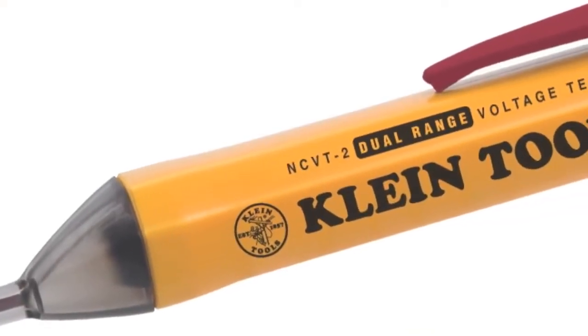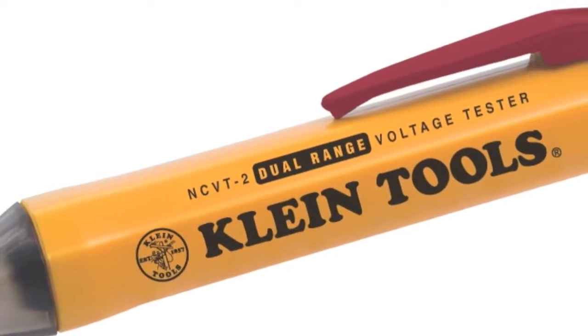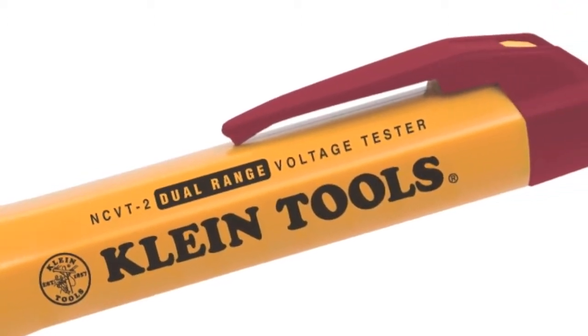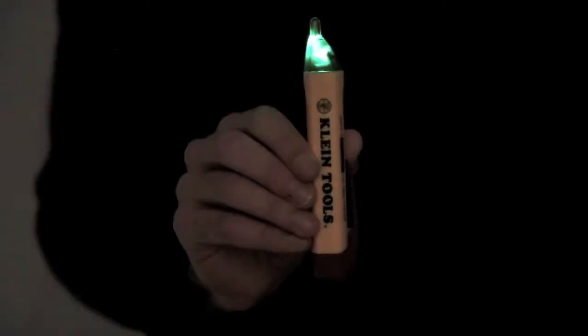Unlike competitive non-contact voltage testers, the Klein Tools NCVT2 has no confusing adjustable range and features a power-on green LED so you always know the tester is on and ready to detect voltage.